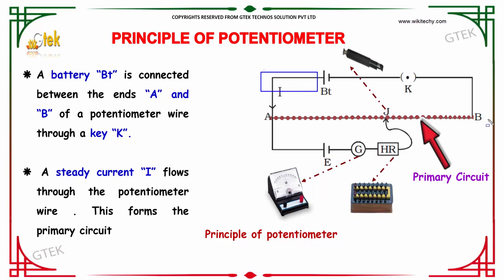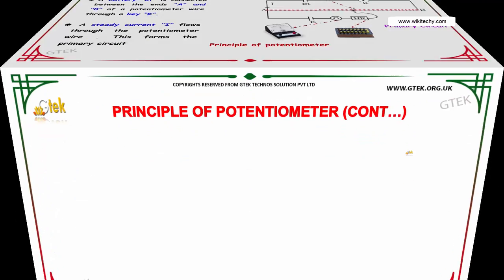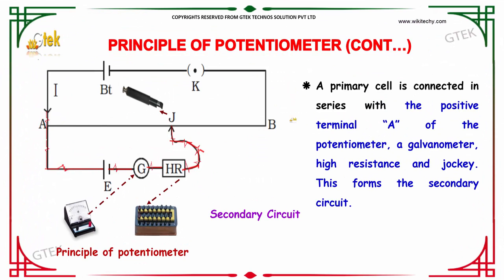This is your primary circuit. You got your circuit with the battery, key, and you got your cell, galvanometer, and you got your jockey here with the wire. Your primary cell is connected in series with the positive terminal A of the potentiometer, a galvanometer, a high resistance, and jockey. This forms the secondary circuit.